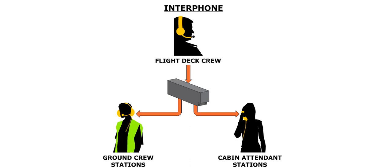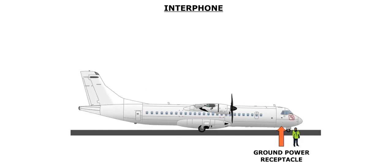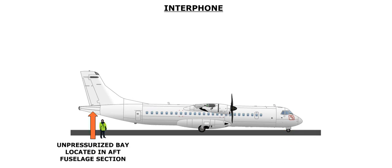The interphone allows communication between the flight crew, cabin crew, and ground crew through certain ground stations outside the aircraft. These ground stations are located in the hydraulic bay, located in the left main gear fairing, the ground electrical power receptacle, and the unpressurized bay, located in the aft fuselage section.